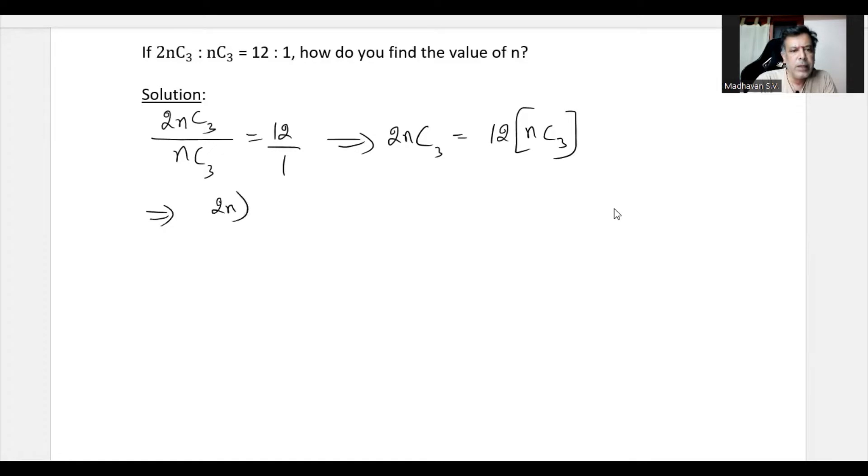Further expanding it, we have 2N factorial divided by (2N-3) factorial times 3 factorial. That is equal to 12 times N factorial by (N-3) factorial times 3 factorial. So we can cancel 3 factorial and 3 factorial.